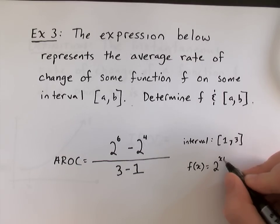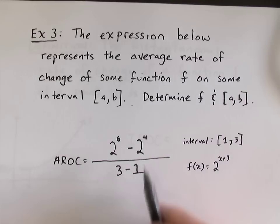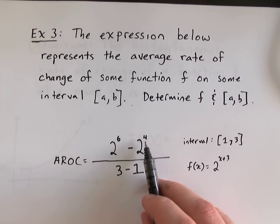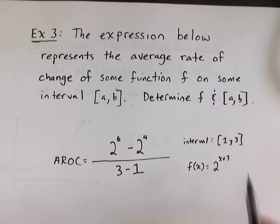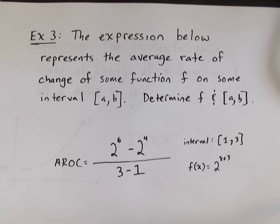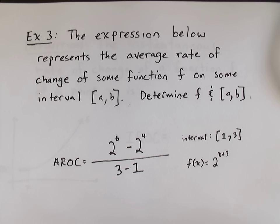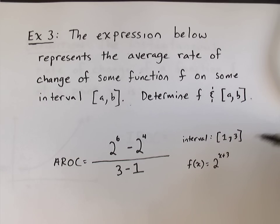2 to the 1 plus 3 would give me 4. And then, 2 to the 3 plus 3 would give me 6. So, my function should be 2 to the x plus 3. When you're working those out or you're trying to figure out problems like that, use the denominator to help you with the interval. Use the numerator to help you with the function itself.